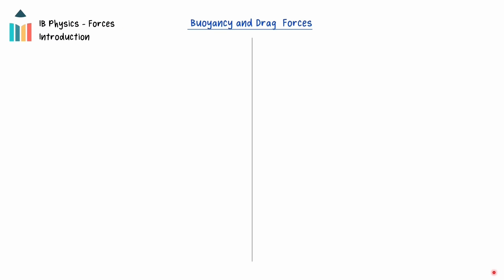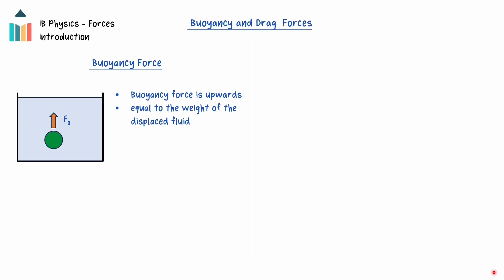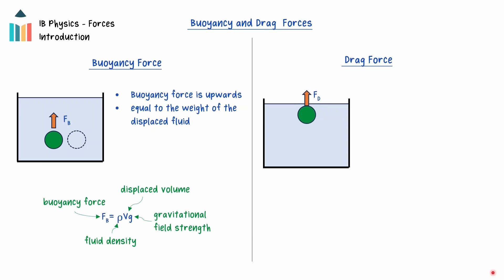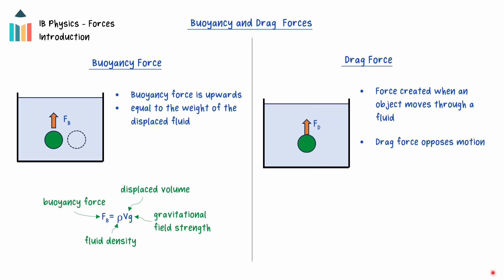Buoyancy and drag forces are created when an object interacts with a fluid. These forces are discussed in more depth in the Fluid Forces video. An object in a liquid or gas will experience an upwards buoyancy force. Archimedes' Principle states that the buoyancy force acting on an object is equal to the weight of the displaced fluid. The buoyancy force is equal to the density of the fluid times the displaced volume times the gravitational field strength, lowercase g. The drag force is a force that occurs when an object is moving through a fluid. The collisions between the particles and the fluid create a force in the direction opposite to the motion of the object. If the object is spherical with a small radius, Stokes' law can be used to find the drag force. The drag force is equal to 6 times pi times the viscosity of the fluid times the radius of the object times the velocity of the object.